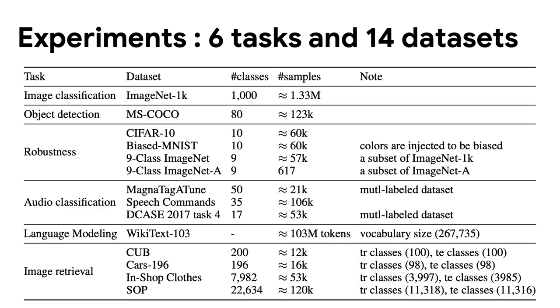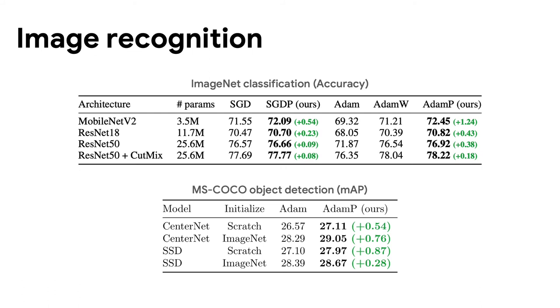We validate our optimizer on various tasks and datasets. We perform comparison experiments on six tasks and fourteen datasets including vision, audio and language domain. Our optimizer shows better results than baselines in ImageNet classification, and MS COCO object detection.